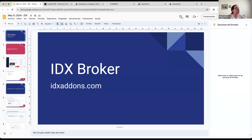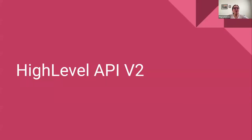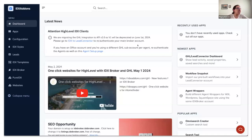We have something important - you might not see the difference but it's important that you make this upgrade. All of this is in IDX Broker and you can find it at idxaddons.com. High Level released the API version two about two months ago, and when we started creating this High Level integration we started using API version one, so what you need to do is upgrade to version two.